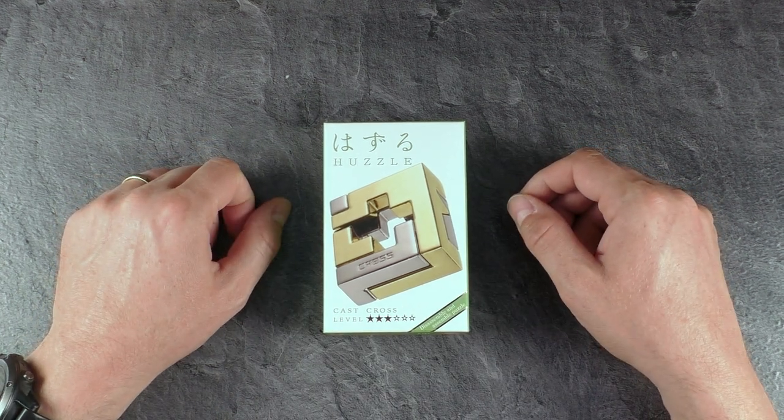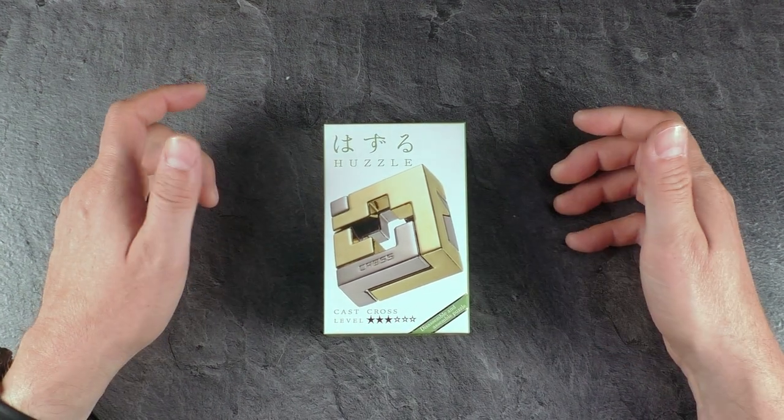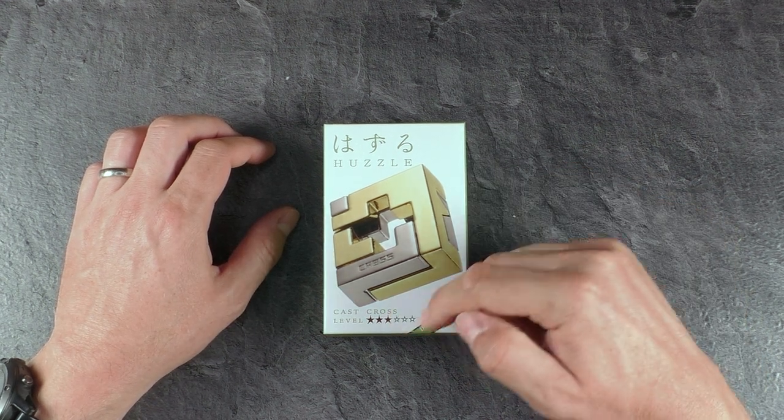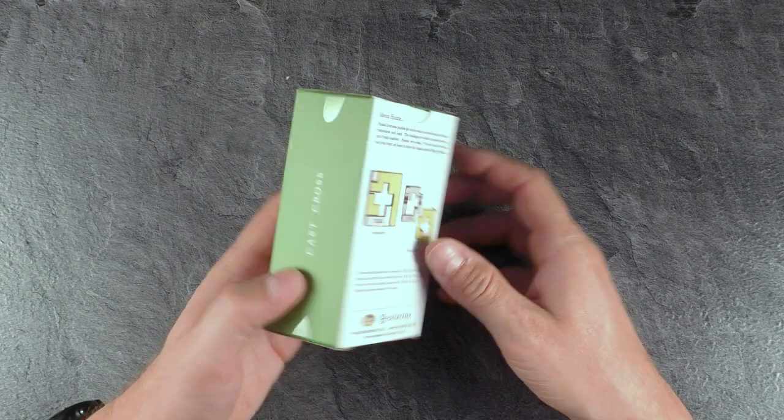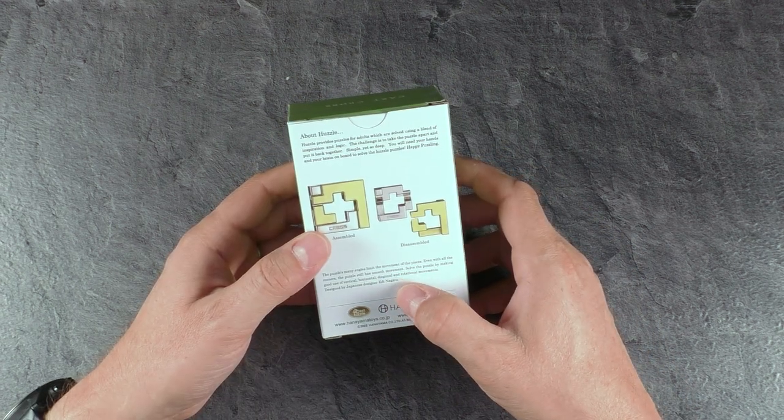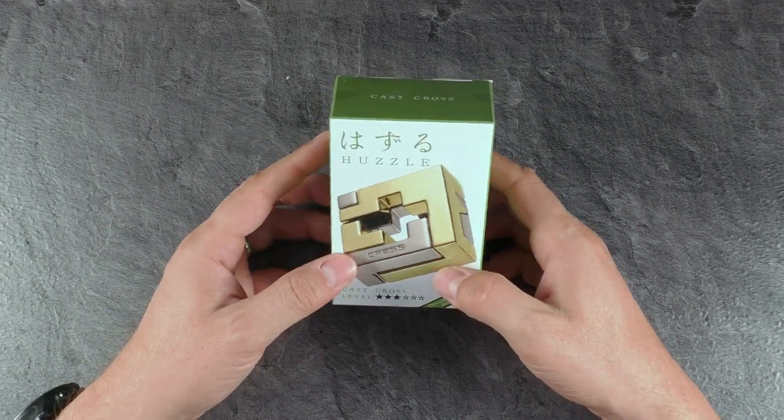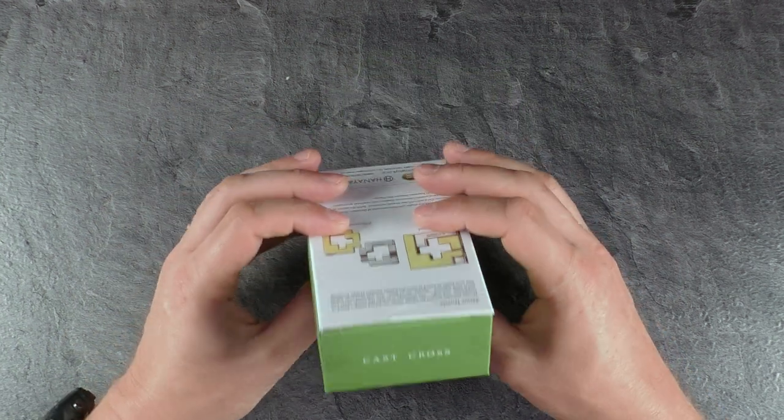Hi and welcome to another episode of Mr. Puzzle. Today with another puzzle of Hanayama called the Cast Cross. Level is three out of a maximum of six. Designed by Eddie Nagata from Japan and also made in Japan by the well-known company Hanayama.